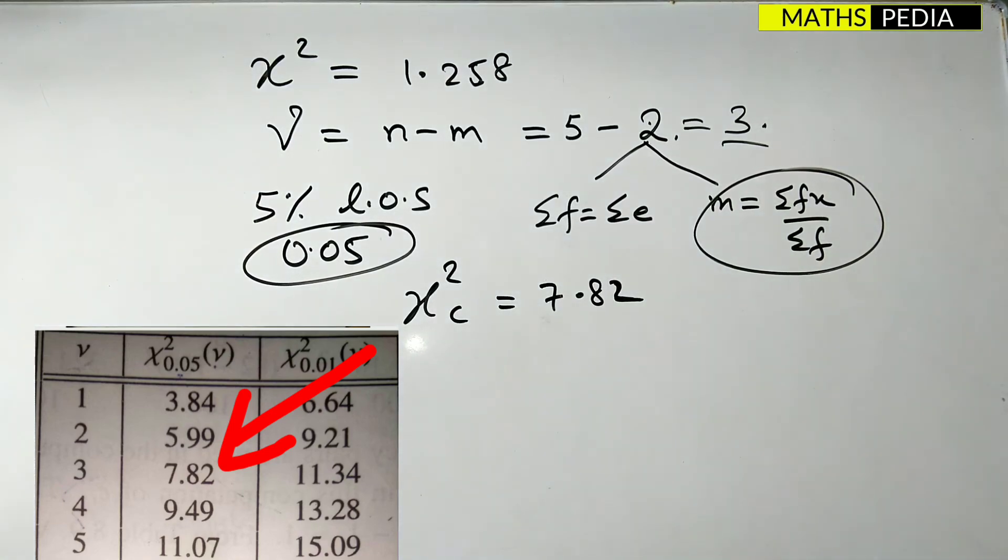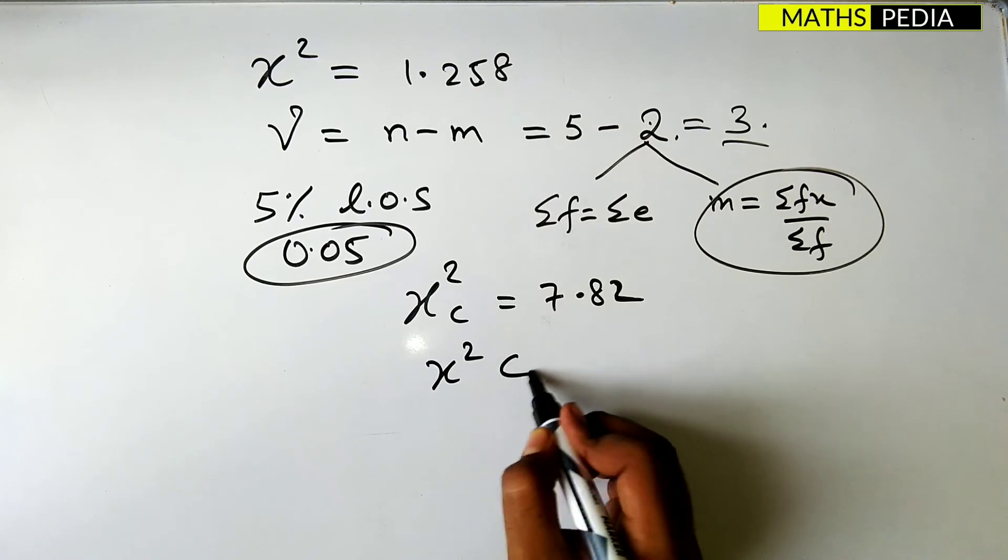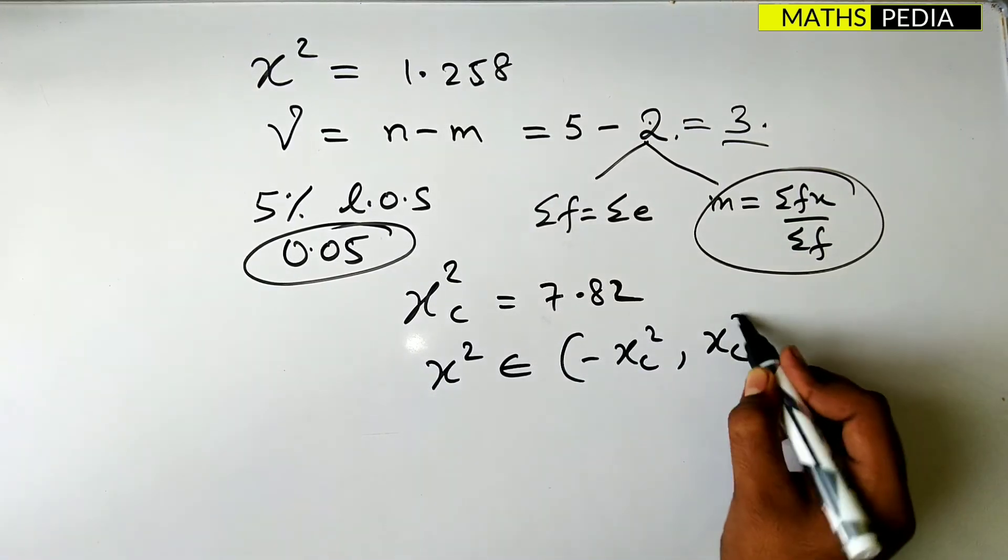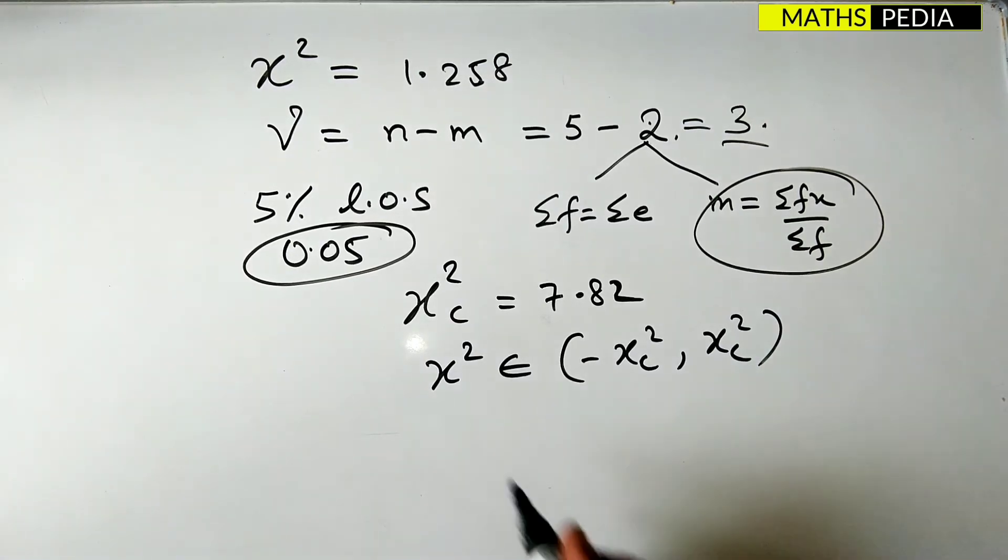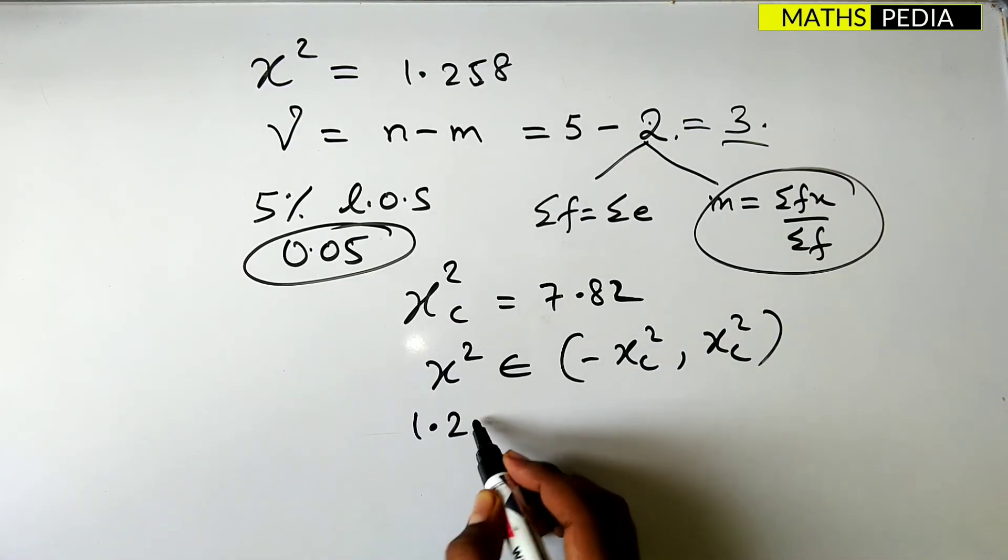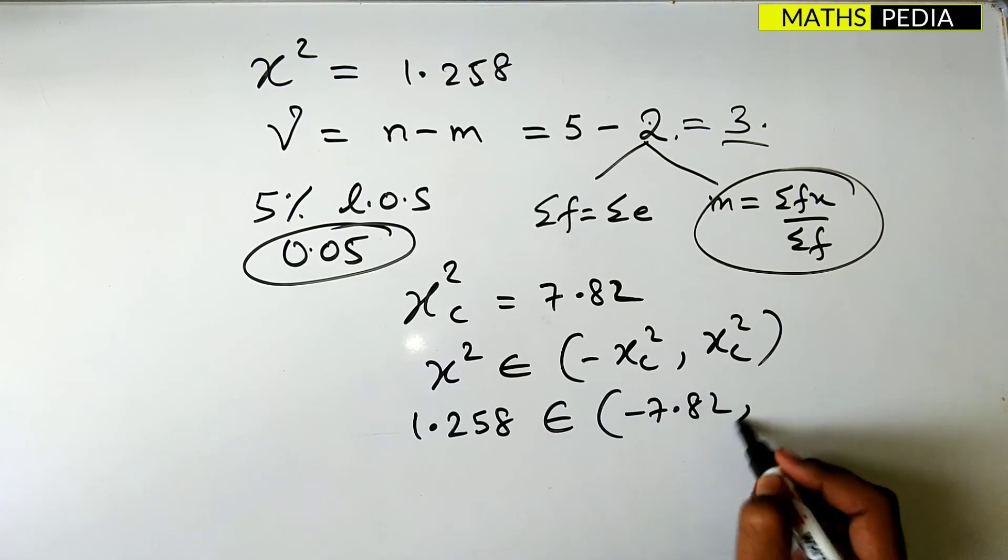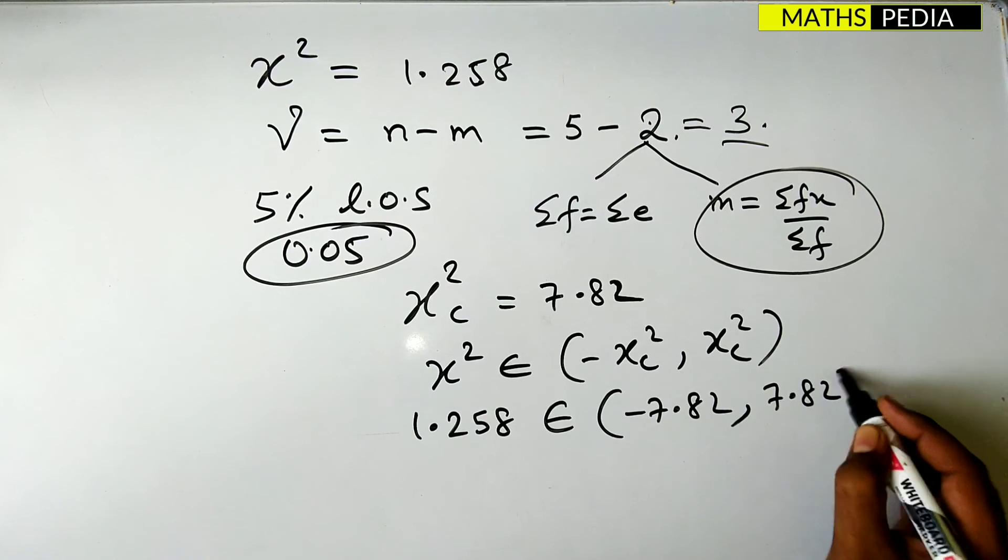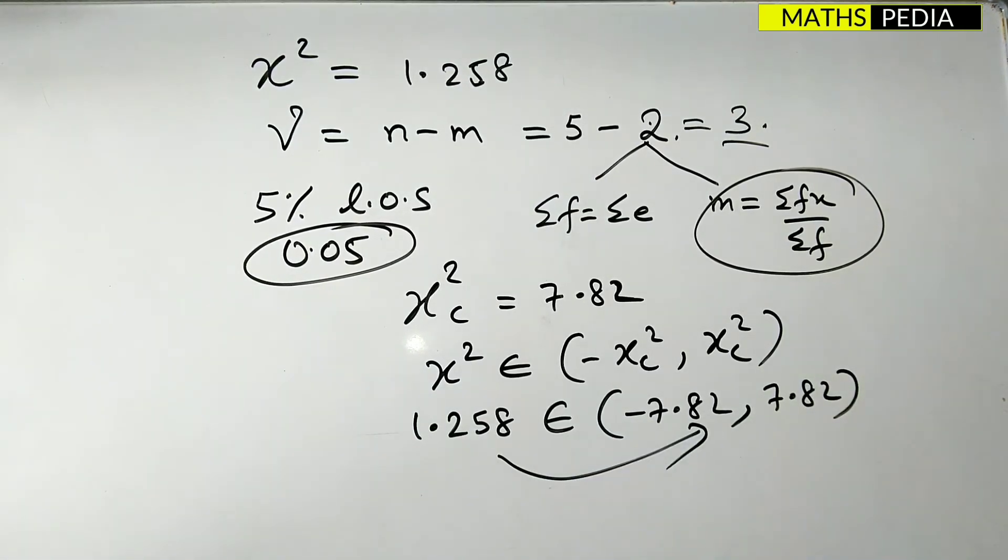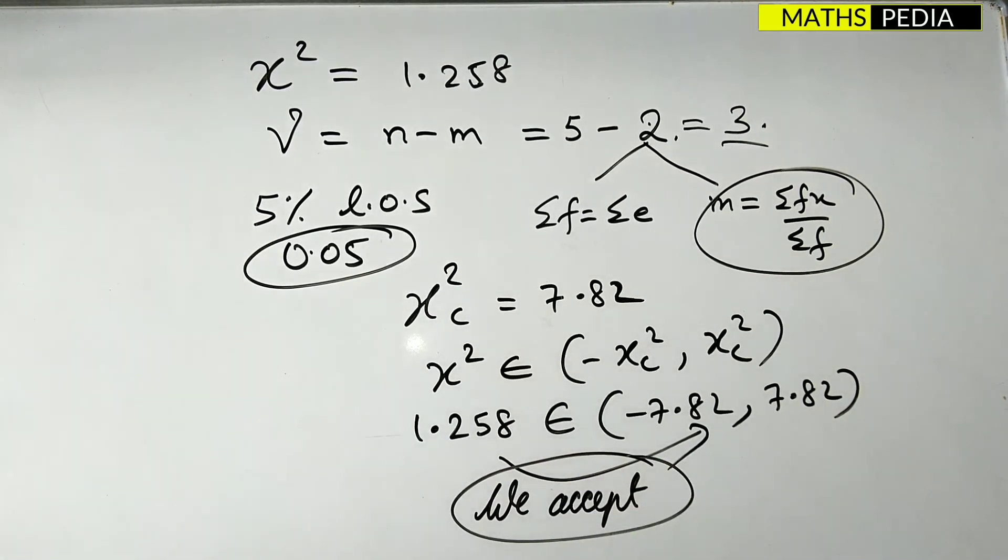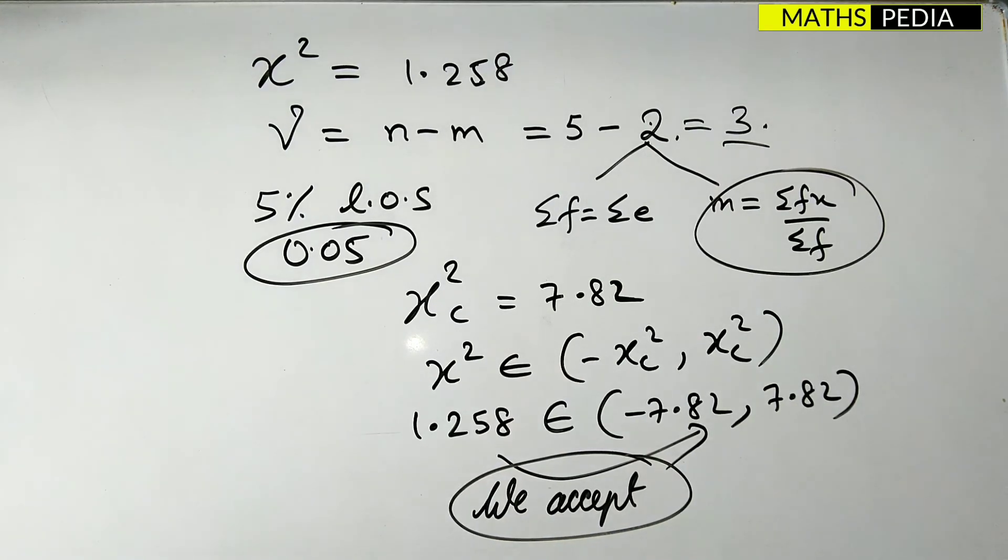Now we need to check whether chi-square belongs to minus chi c square comma plus chi c square interval or not. That means whether 1.258 belongs to minus 7.82 comma 7.82. Yes of course it belongs to this interval. Therefore we can accept the hypothesis. So it means that the Poisson distribution is a good fit to the given frequency distribution.